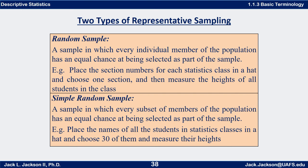For example, if I took the men's basketball team as my sample, I would get an average height much higher than the average height of all students at the university. So you have to make sure your sampling methods are very good. Two ways generally considered good approaches are what are called a random sample and something even stronger called a simple random sample — and there's a subtle difference between the two.